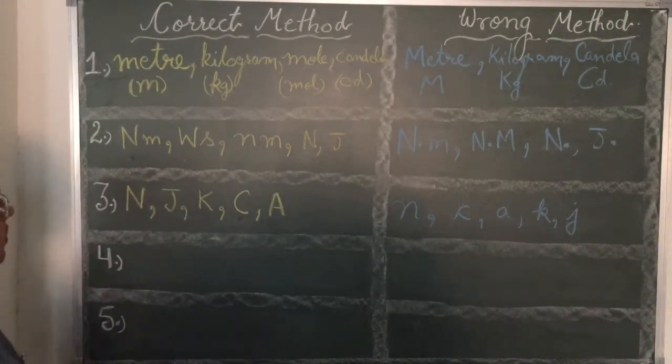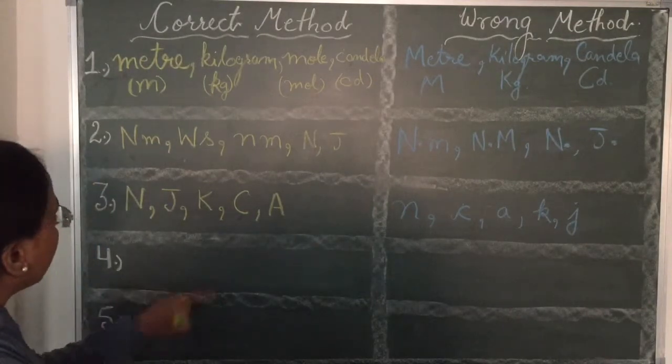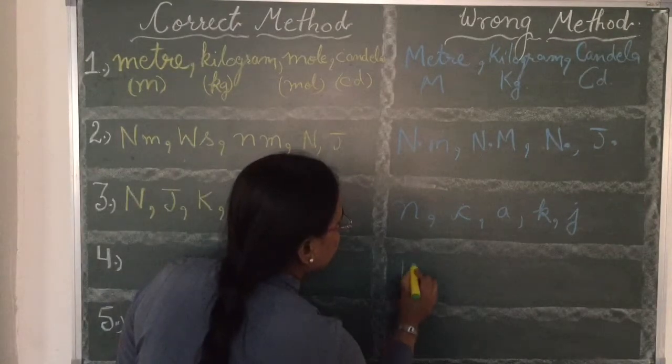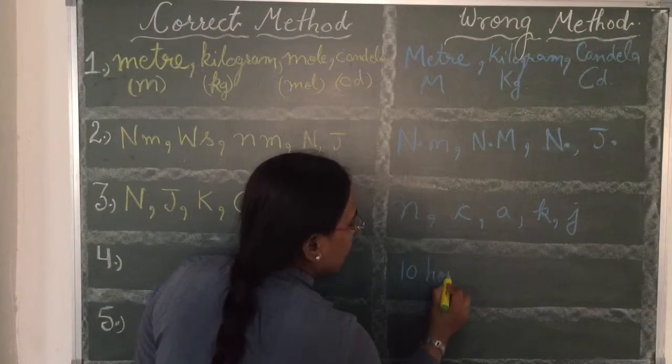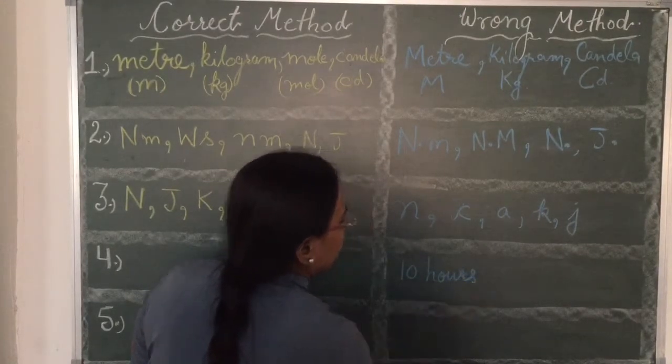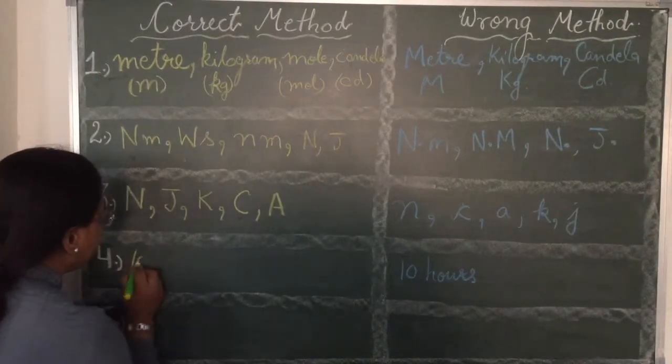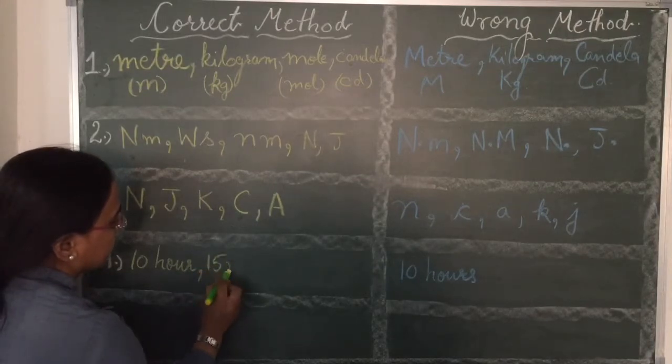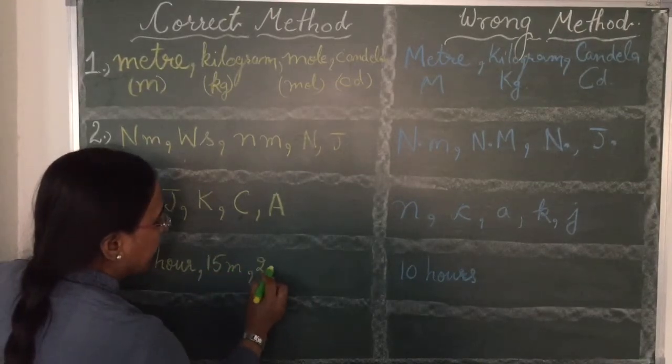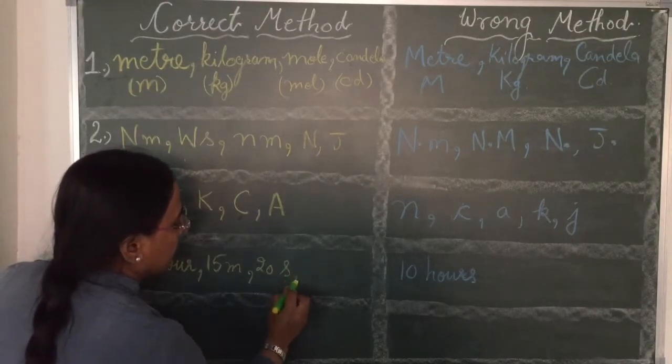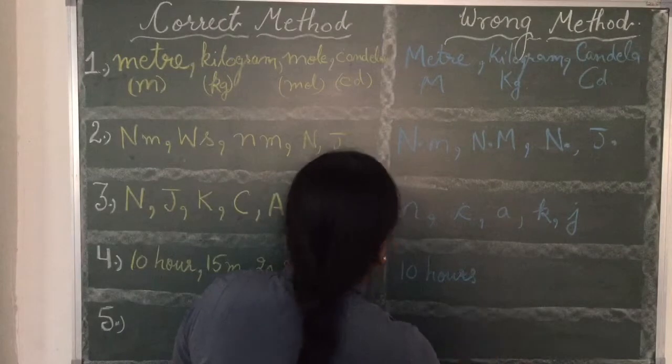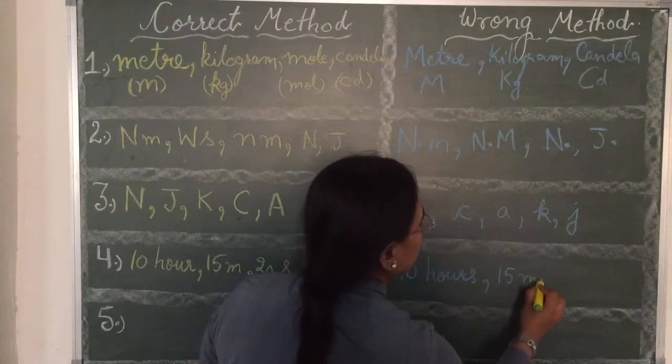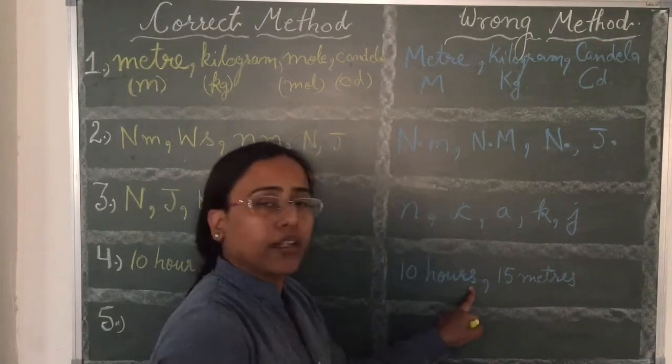Fourth is, the symbol is not written in the plural form. Now, like 10 hours, it is not hours, it is hours. 10 hours, 15 meter, 20 seconds. And 15 meters is wrong one. It is used in English, not in physics.